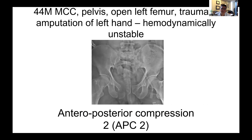Bringing this all together into a case from just a few weeks ago here at the Brigham: a 44-year-old gentleman who came in from a motorcycle collision with an open left femur fracture, an amputation of his left hand, and hemodynamic instability with a pelvic ring injury. He has an APC2 injury bilaterally — the front is fairly displaced, the pubic symphysis itself is intact but the pelvis is wide, and both sacroiliac joints are widened in the back. This is a bad, life-threatening injury that needs urgent treatment in addition to his other injuries.